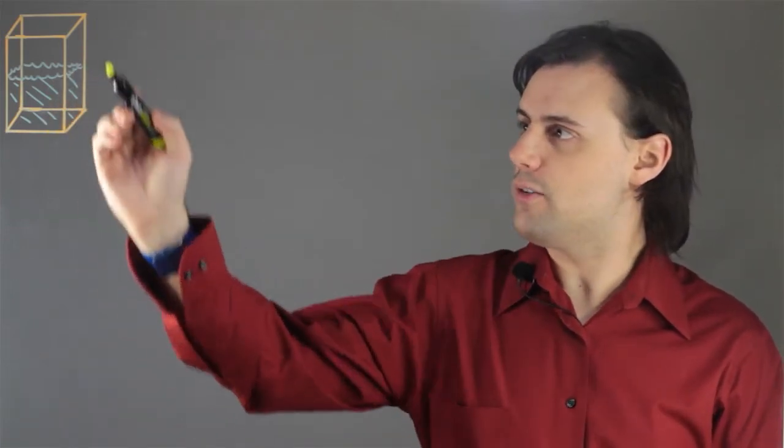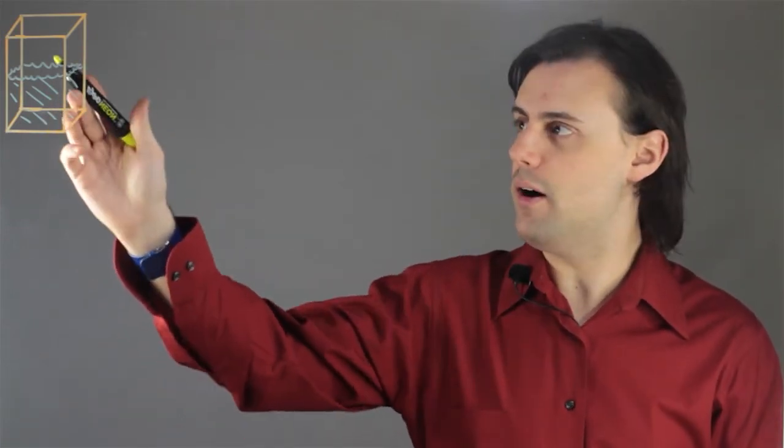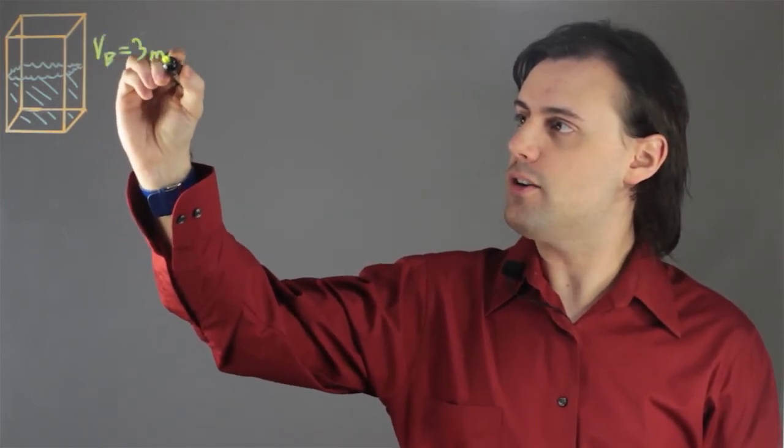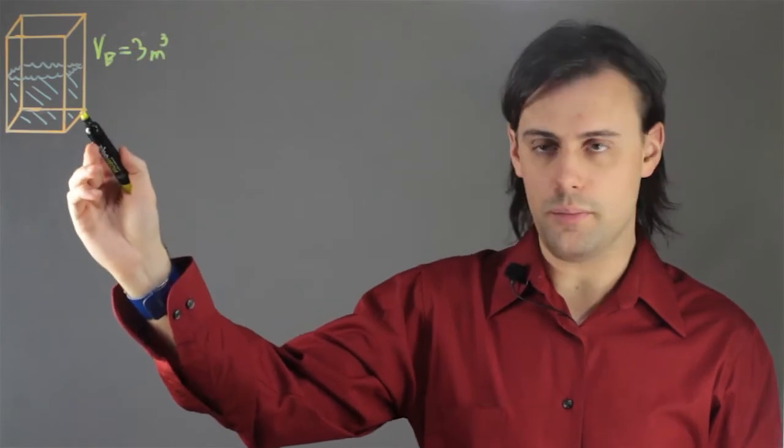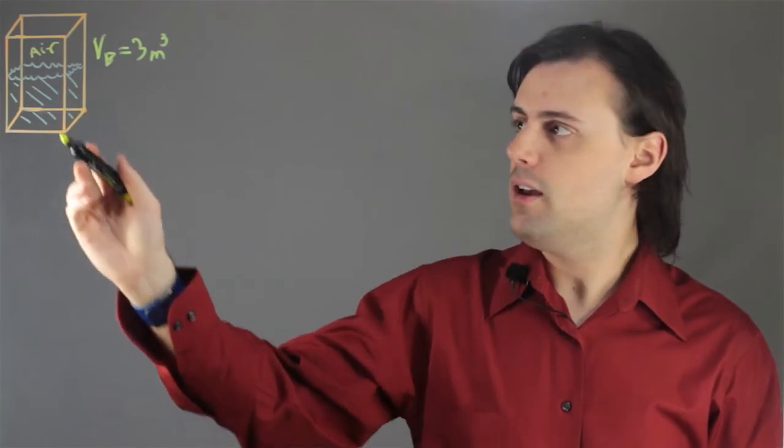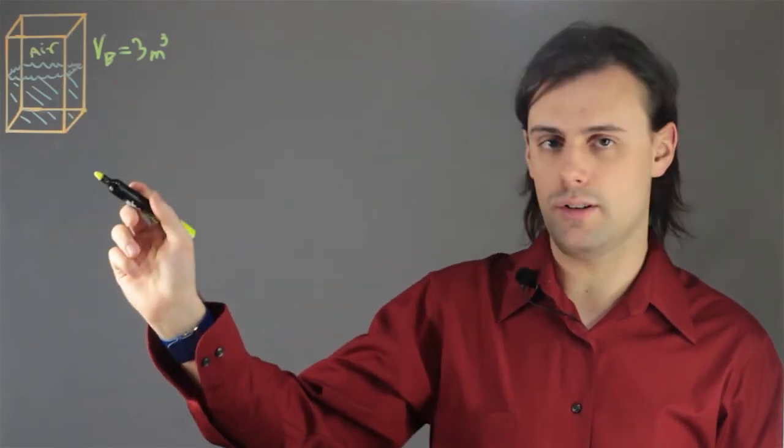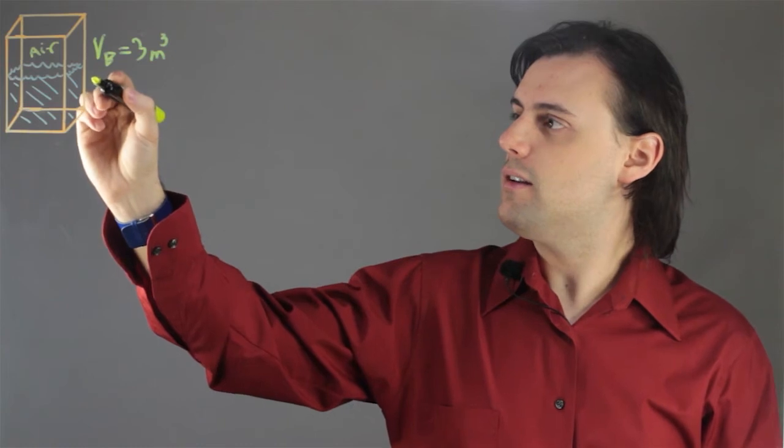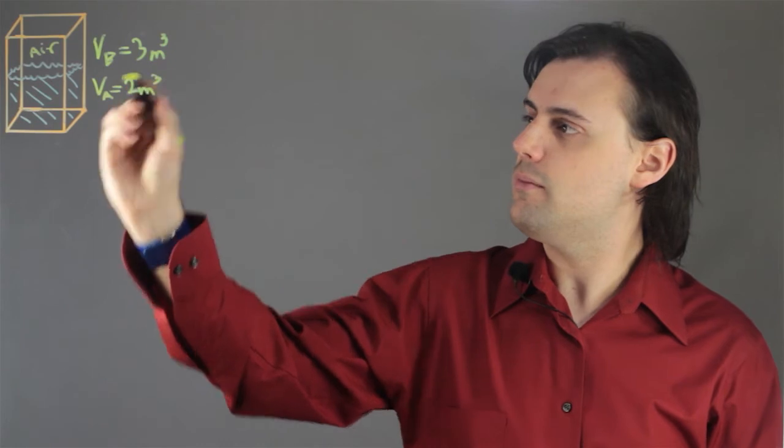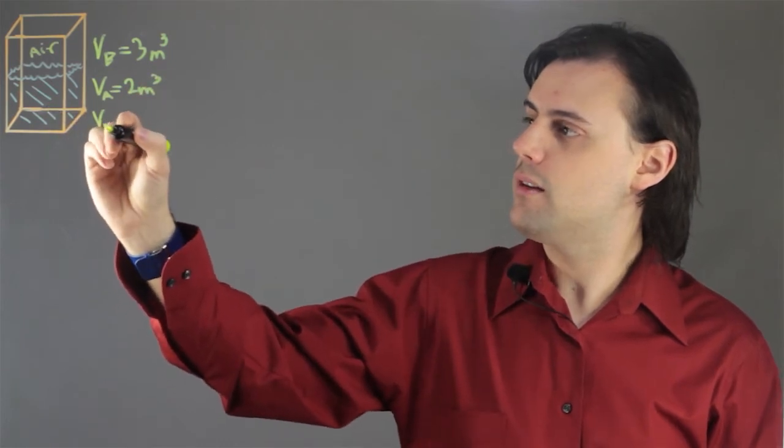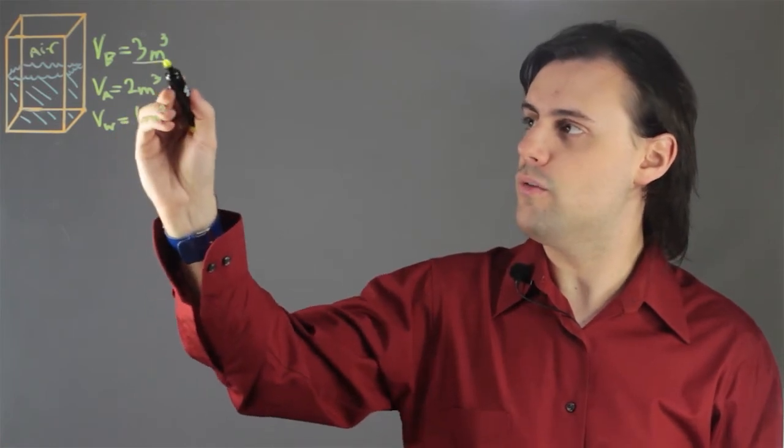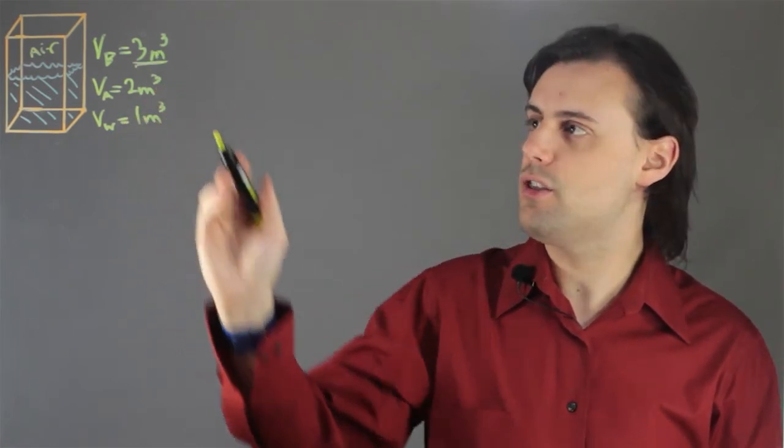Let's consider a hypothetical scenario in which we have a box with a total volume of 3 meters cubed. In this box we have air and we also have water. And let's say, since this is not necessarily drawn to scale, that the volume of air is equal to 2 meters cubed and the volume that the water inhabits is equal to 1 meters cubed, such that they add up to the total volume of the box, naturally, 3 meters cubed.